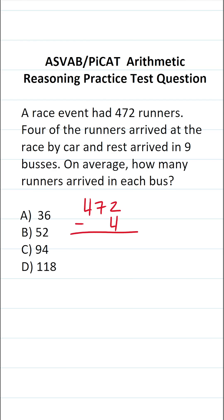I know many of you could do that mentally, but I'm going to show you how to solve this one step by step. 2 minus 4 we can't do, so we're going to have to borrow. This becomes 6, this becomes 12. 12 minus 4 is 8.